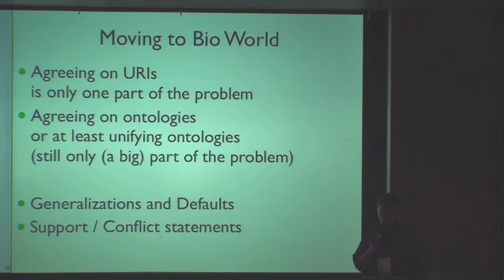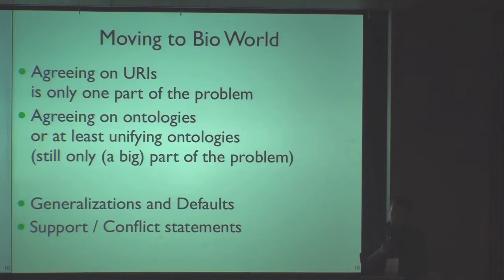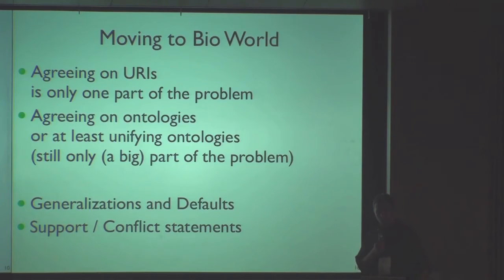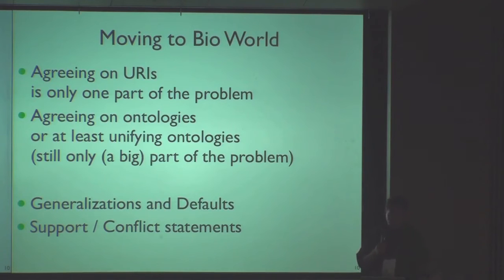This adds to some of the other comments we've been hearing today about moving towards what we in our lab refer to as bio-world — getting to representations of biomedical entities. Agreeing on URIs is only part of the problem. It comes to steps for agreeing on ontologies, or at least unifying them, so that we know when a relation is inserted somewhere we have some notion of what it means. But if we want to get to really interesting problems, things like generalizations, defaults, and supporting and conflicting statements housed in the same knowledge base are important to think about. When biologists are forming arguments and we're building tools to support them, it's not just a case that there'll be one answer — there might be two or three. You want to know which claims and which documents support one side versus the other, and being able to trace the provenance and reason coherently with conflicting knowledge is very important.